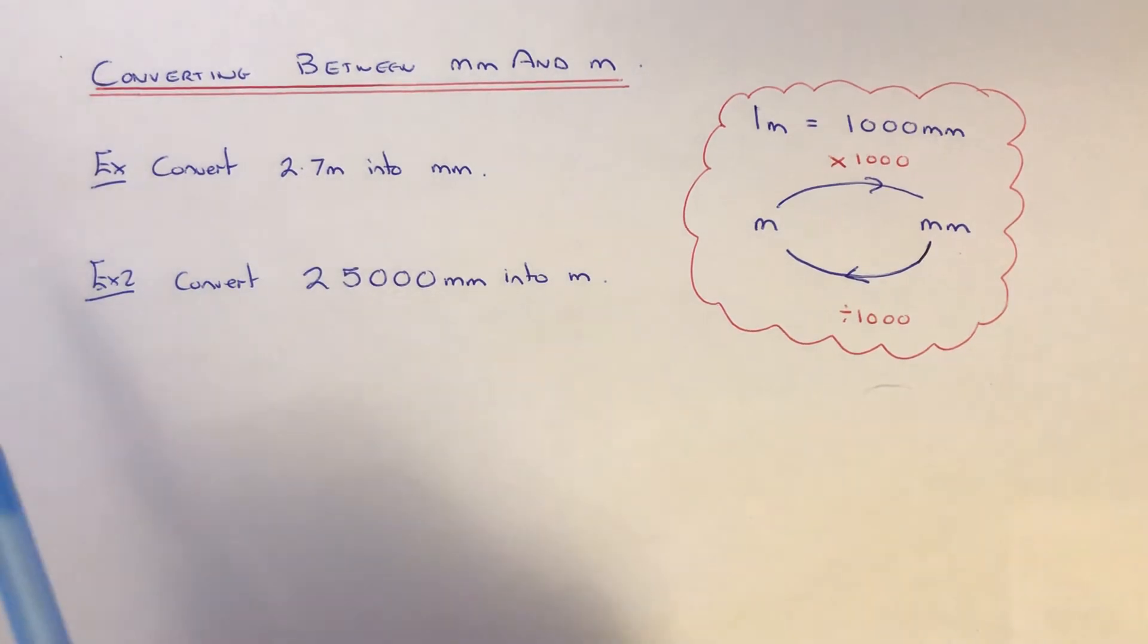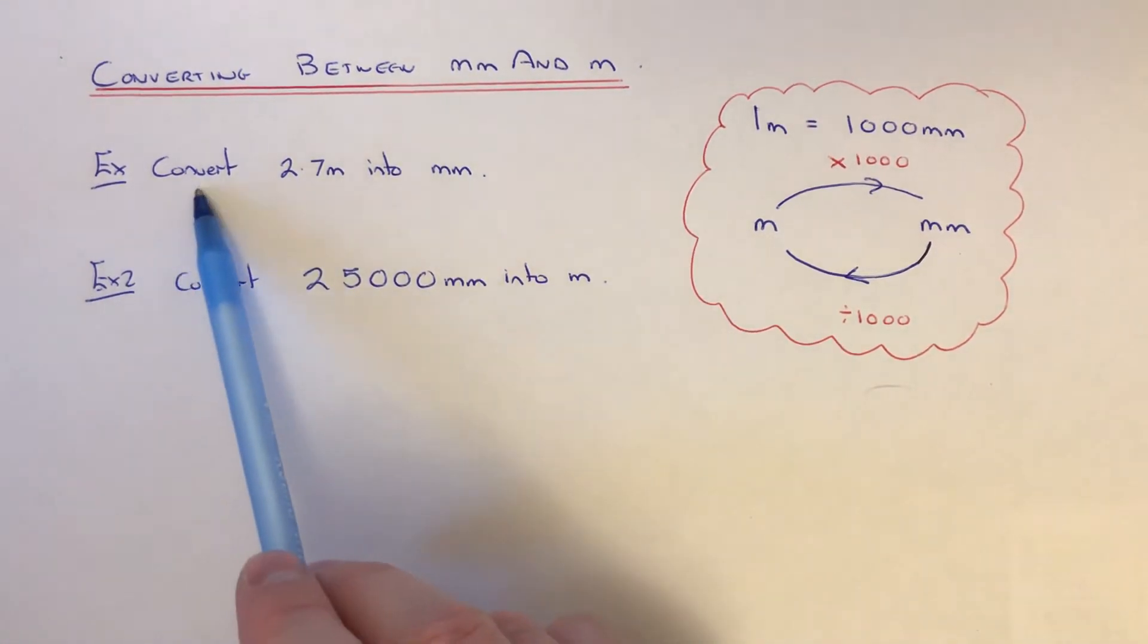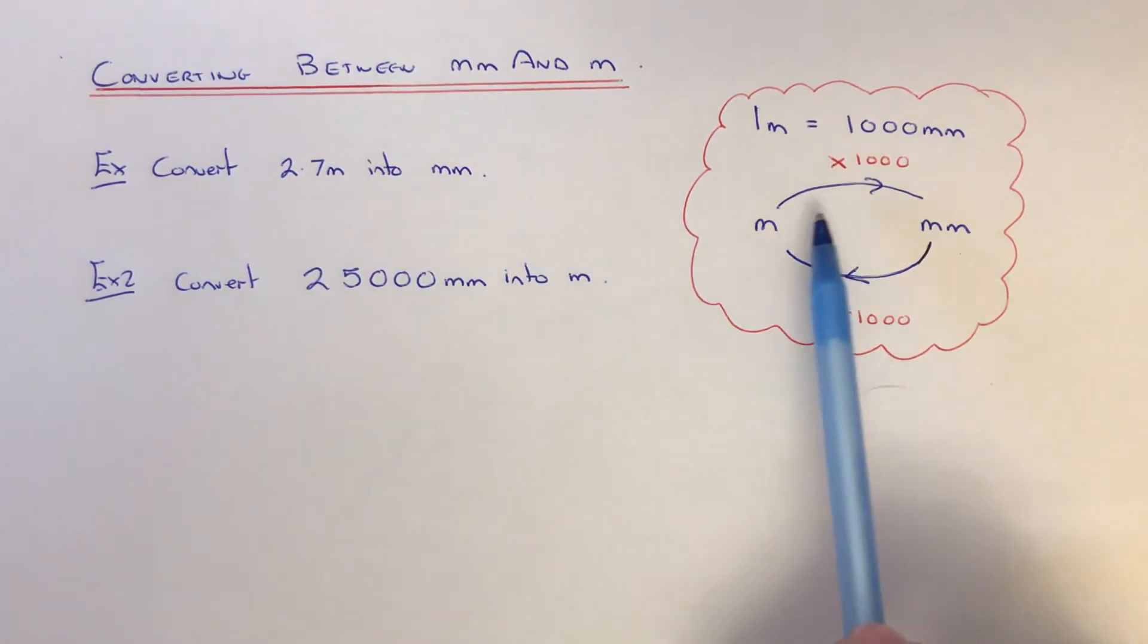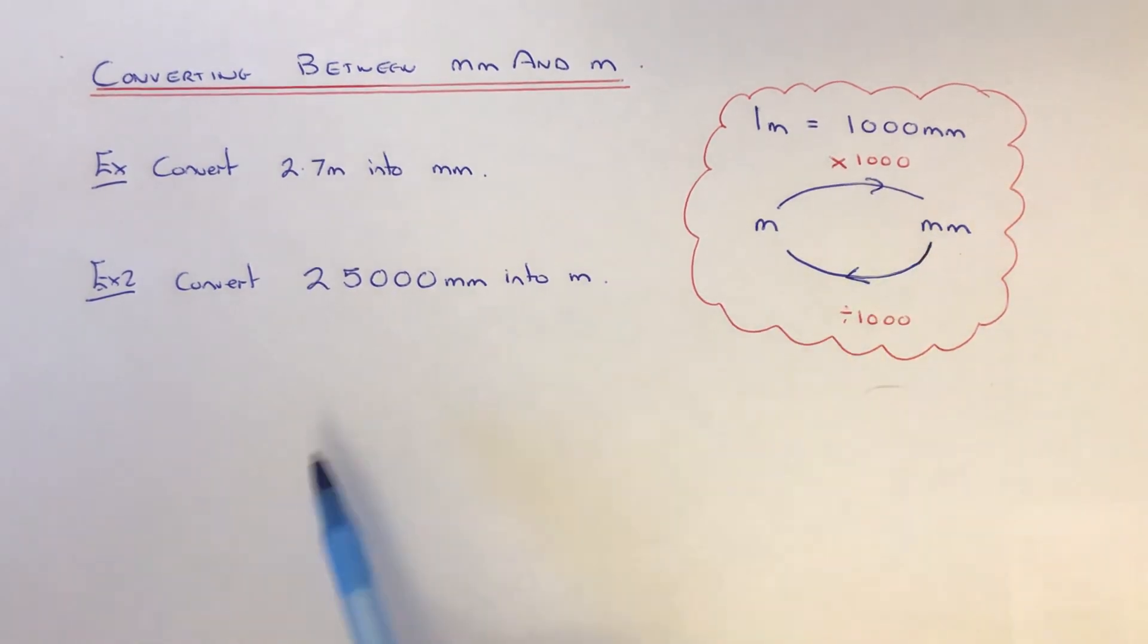So let's have a look at two examples here. Our first one is to convert 2.7 meters into millimeters. To get meters into millimeters, we're going to times by a thousand.